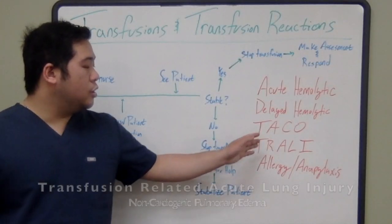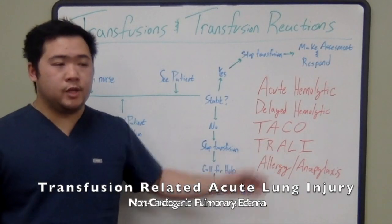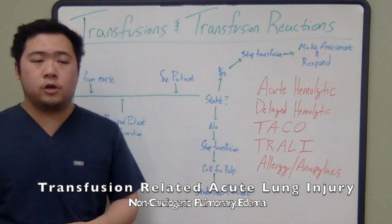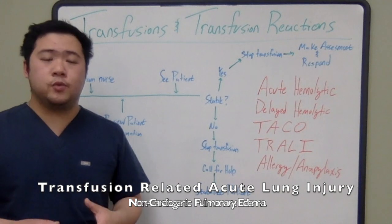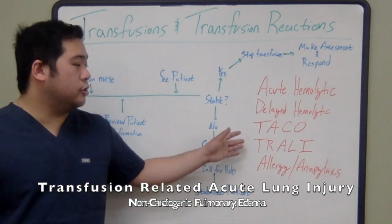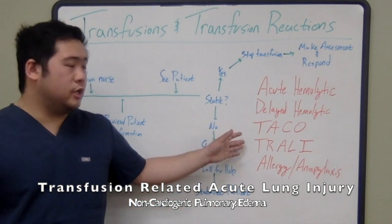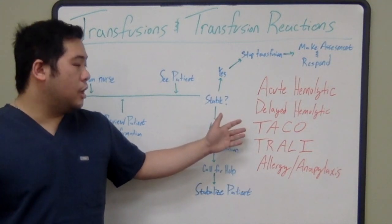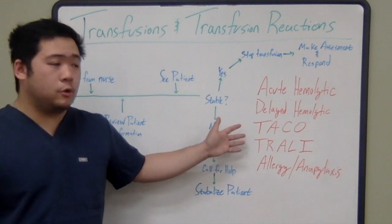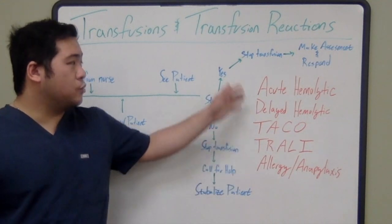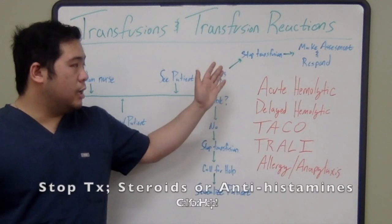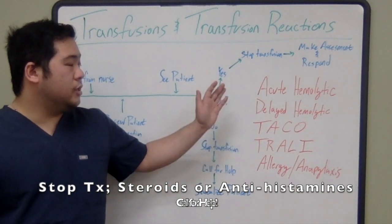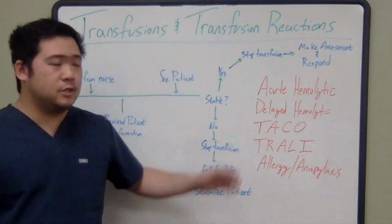TRALI stands for Transfusion Related Acute Lung Injury. The pathogenesis is basically a reaction between the blood product and receptors within the lungs. Patients get a non-cardiogenic pulmonary edema on their chest x-ray, whereas TACO patients have cardiogenic edema — their chest x-rays may look similar. For TRALI patients, again we're stopping the transfusion, and our response is to also call for help and treat with steroids or even antihistamines.